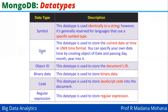The next data type is date. This data type is used to store the current date or current time in Unix time format. We can specify our own date and time by creating an object of date and passing day, month, and year into it.